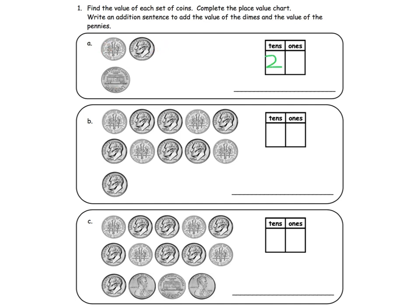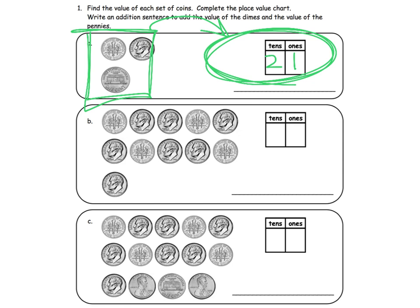So we got two dimes and one penny. So that's two tens and one penny. So the idea is you're also seeing now we're really connecting the coins to explicitly using a place value chart.